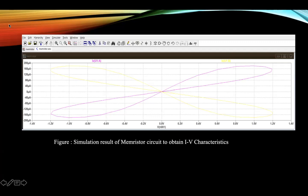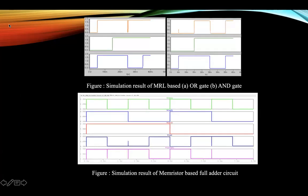Some simulation results are presented here. The first shows the pinched hysteresis loop of the IV characteristics of the Memristor. Next is the MRL-based AND/OR gate, where the blue and green colored signals represent inputs V1 and V2, and the orange color represents output V3. The following figure represents the Memristor-based full adder circuit, showing the waveform where V1, V2, and CN are the inputs and sum and carry are the outputs. It consisted of two XOR gates, two AND gates, and one OR gate.